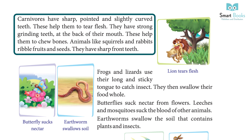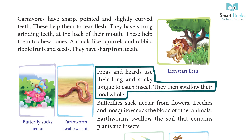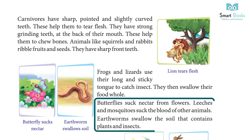Carnivores also have strong grinding teeth at the back of their mouth to chew bones. Animals like squirrels and rabbits nibble fruits and seeds — they have sharp front teeth. Frogs and lizards use their long, sticky tongue to catch insects and swallow food whole. Butterflies suck nectar from flowers. Leeches and mosquitoes suck the blood of other animals.